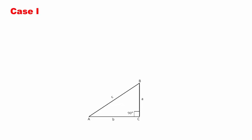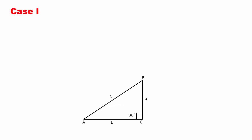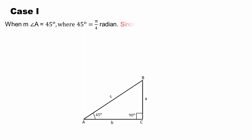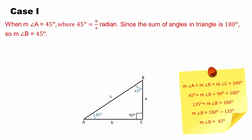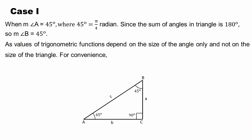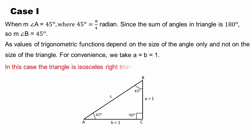Case number 1: We will discuss the 45 degree angle trigonometric ratios. The measurement of angle A is 45 degrees, with vertices A, B, and C.